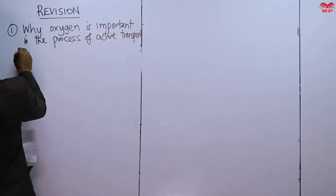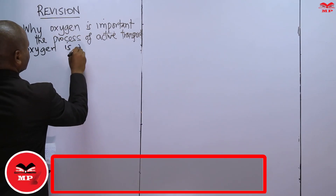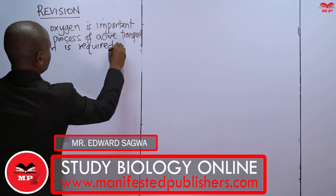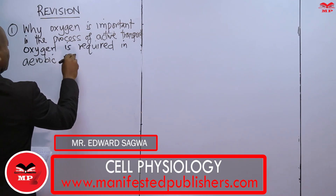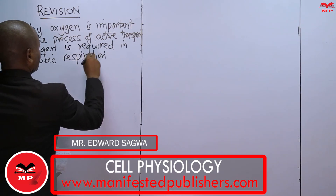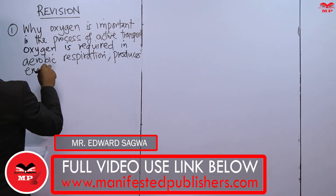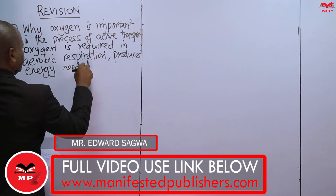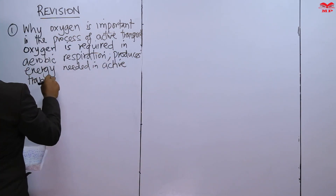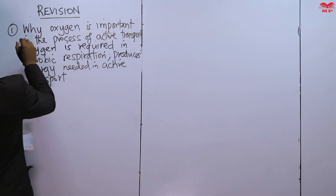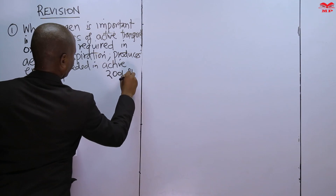The learner was supposed to respond that oxygen is required in aerobic respiration, and this aerobic respiration produces the energy needed in active transport. That was question one, adopted from the past paper of 2001, paper one.